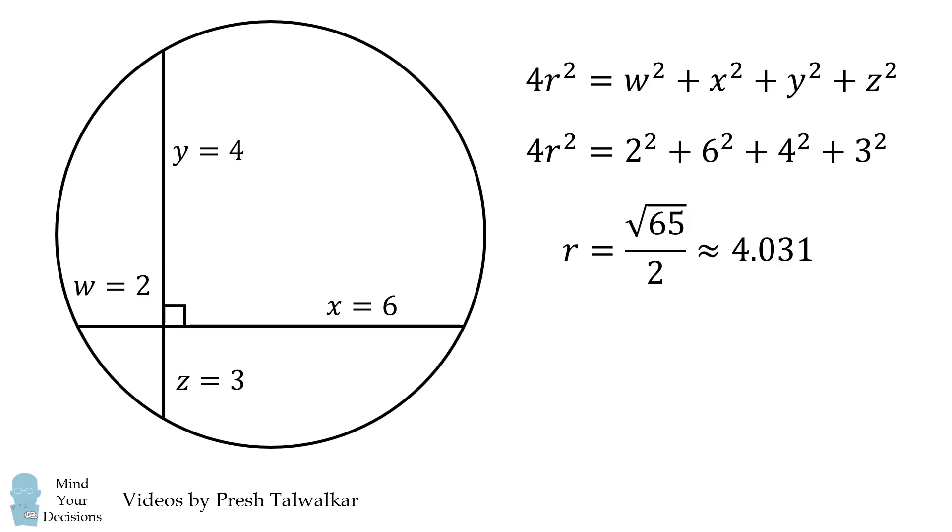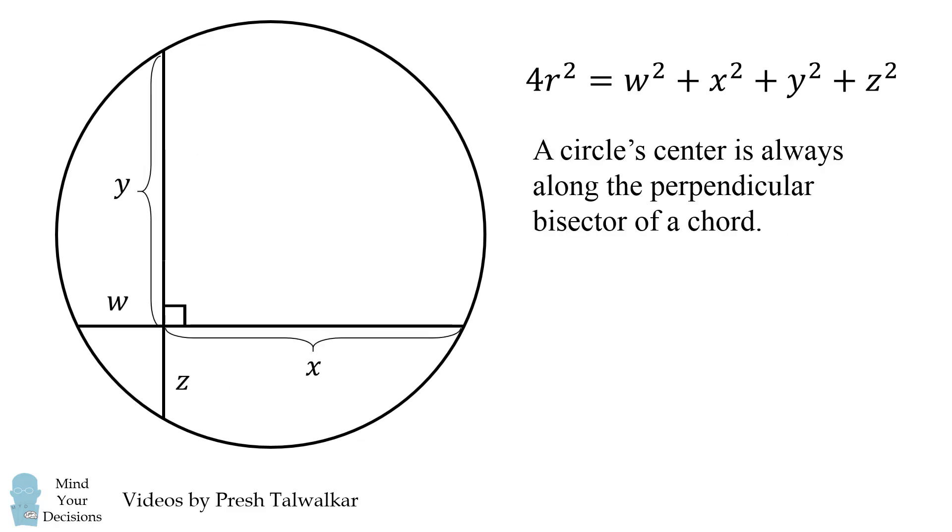But what if you didn't know this formula? Well, let's actually prove why it works. The key principle is that a circle's center is always along the perpendicular bisector of a chord.